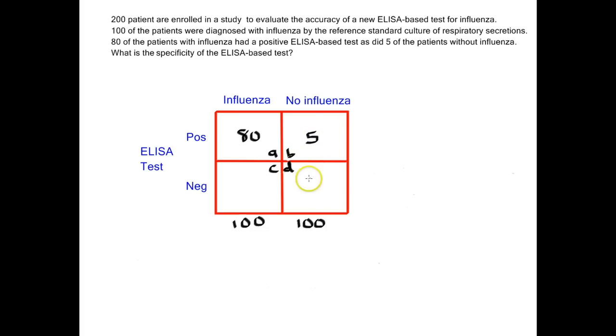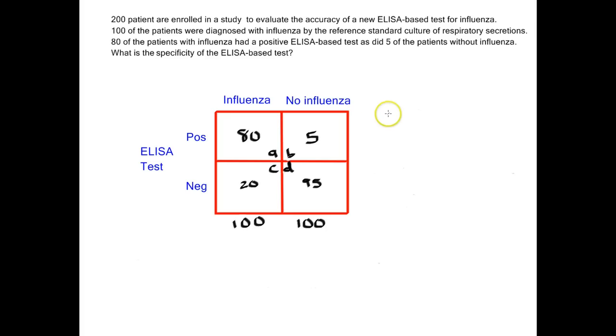Again, everything has to add up, so 95 goes down here and 20 goes over here. Now we're ready to make our calculation of specificity.